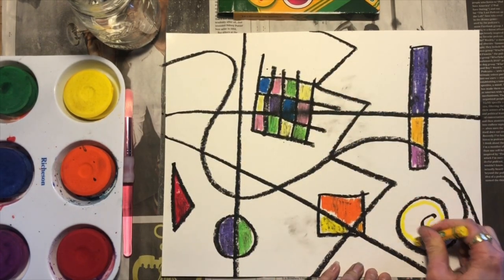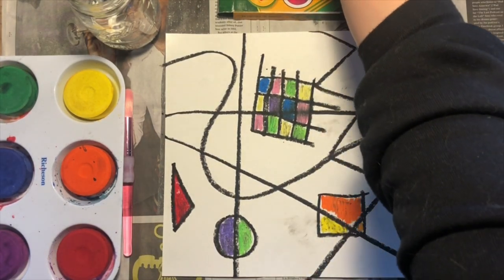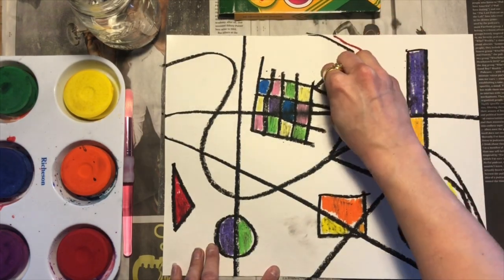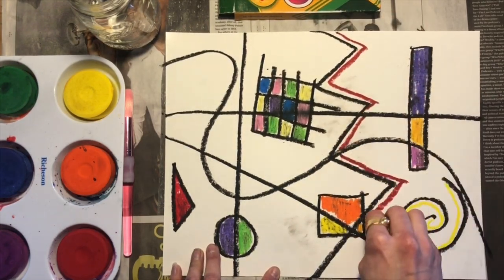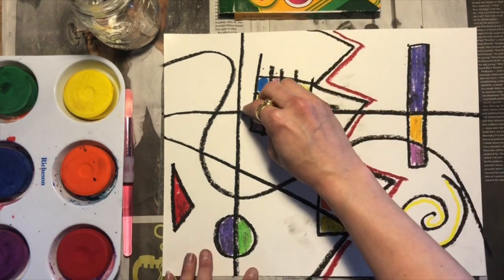So notice how I go over each of my original black lines with another color, not on top of but right next to it. All righty, looks like I'm ready to paint.